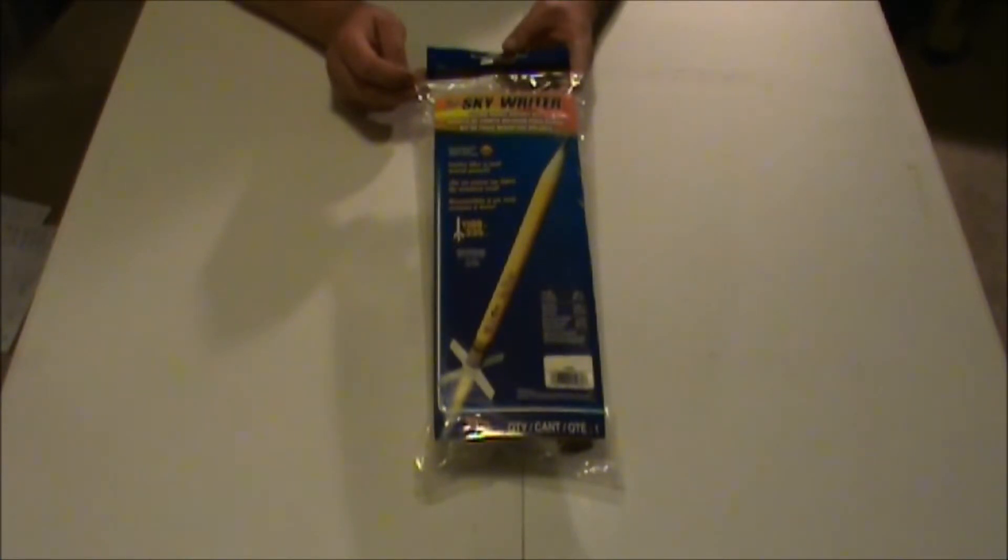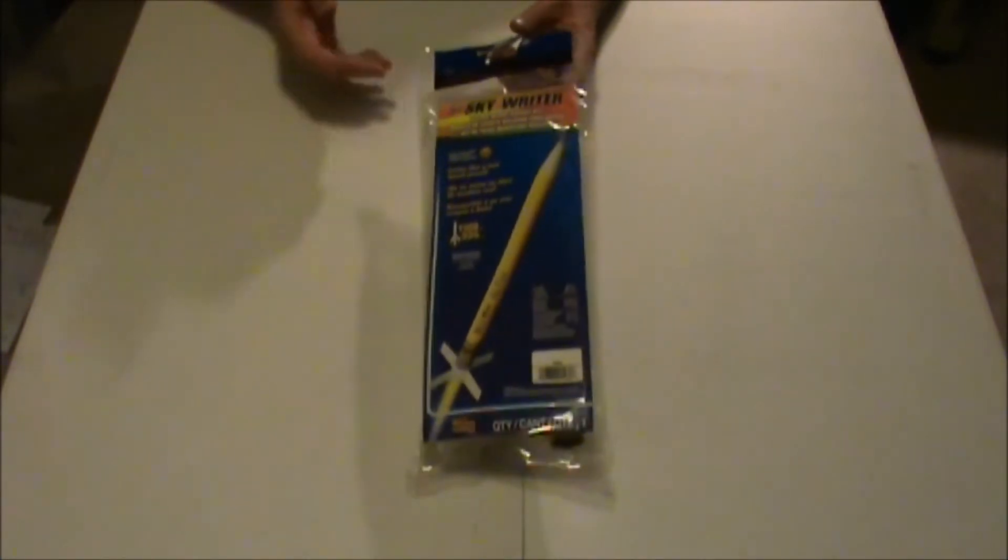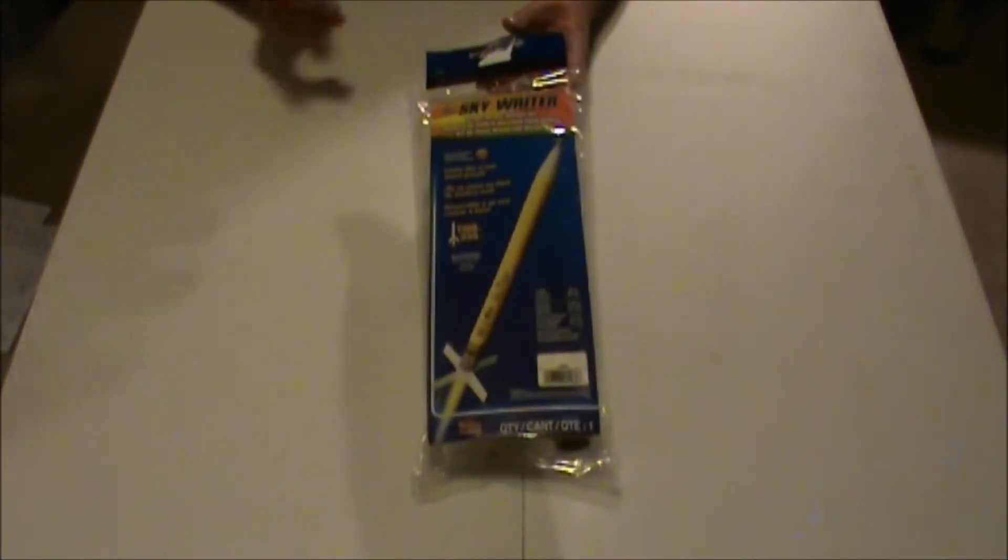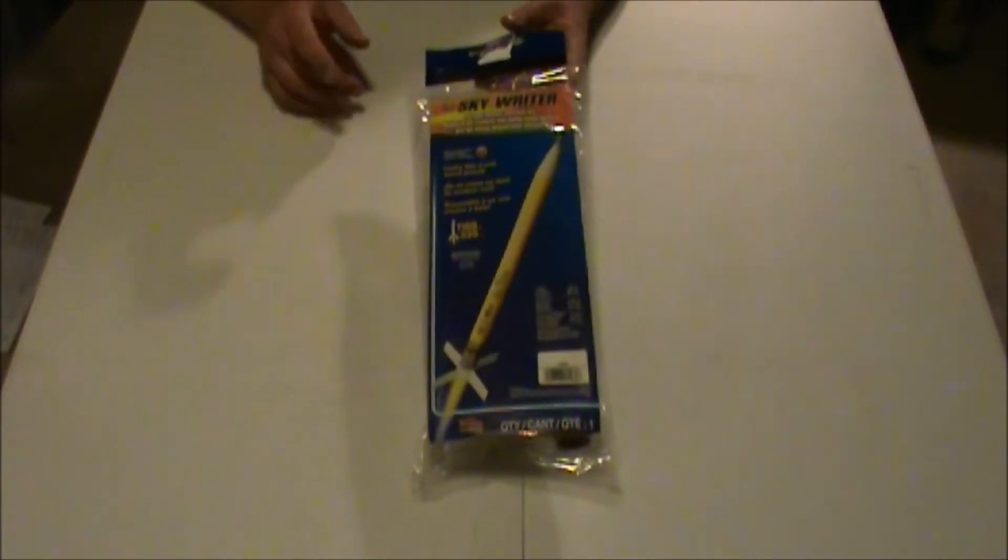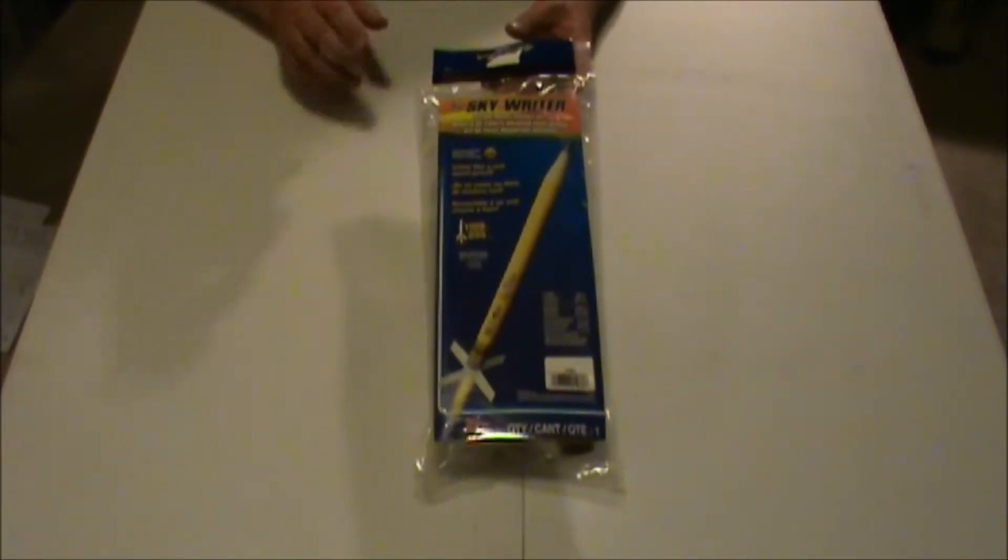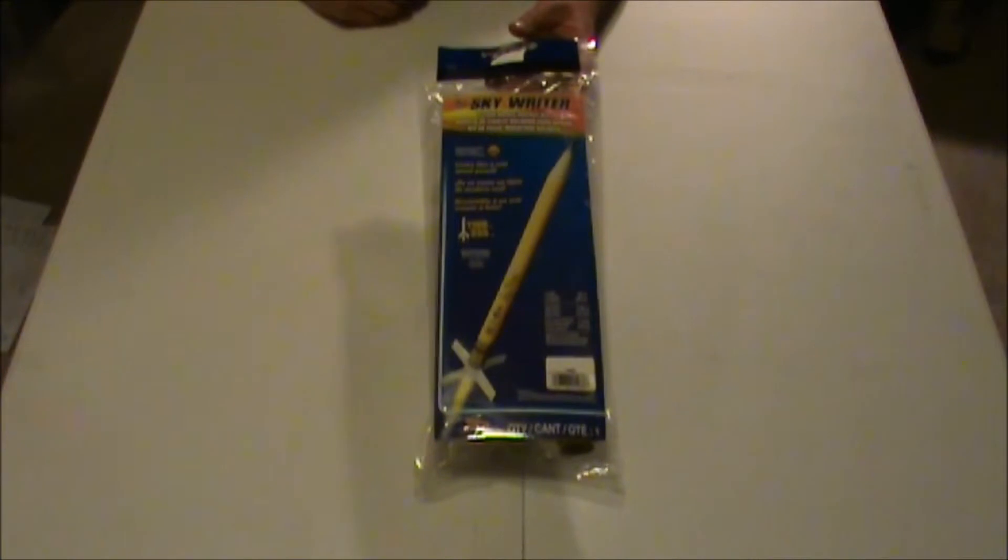The good thing about going to Hobby Lobby is you can get a 40% off discount coupon from their website for one of any product they have. I'll go there with my kids and we pick out a rocket, and today we picked up the Estes Skyrider.